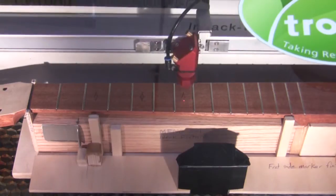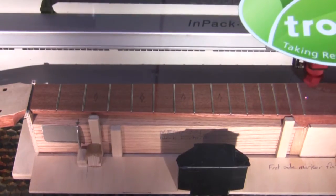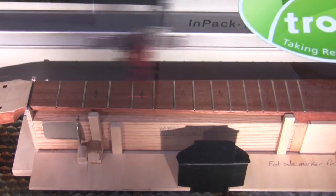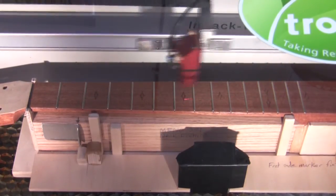So it's putting fret markers at positions three, five, seven, nine, twelve. Twelve is the octave, that's why it gets two. And then there's one more down there at fifteen.